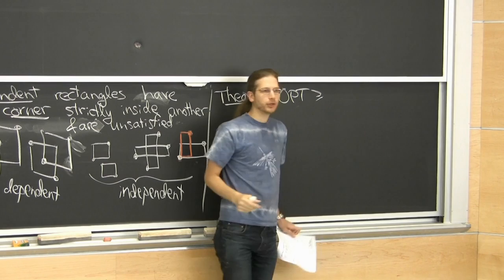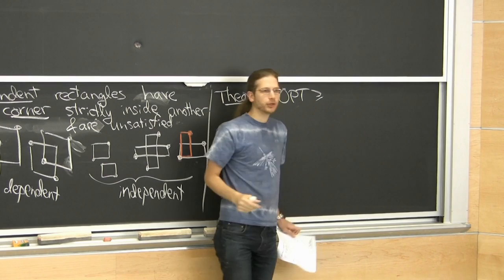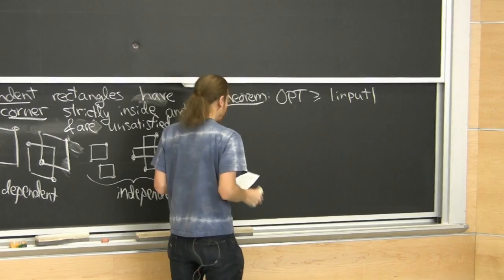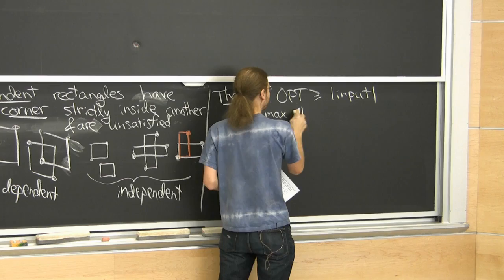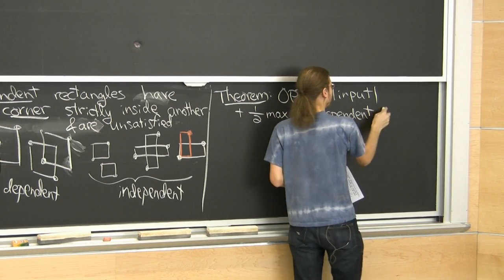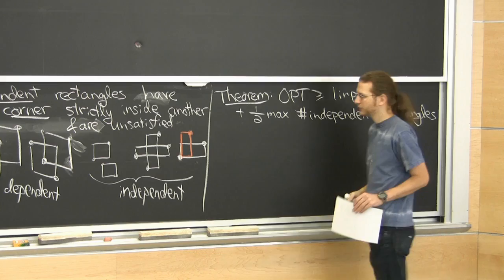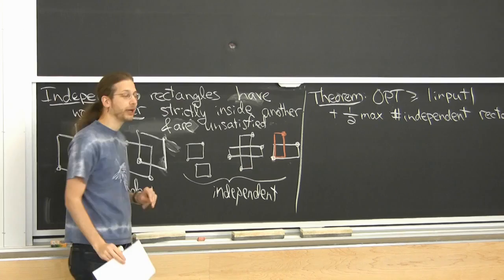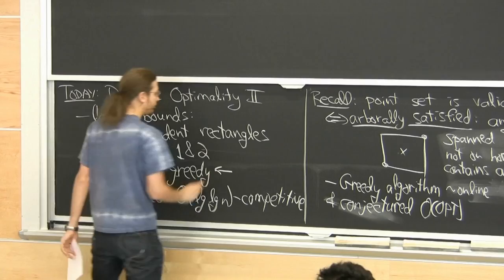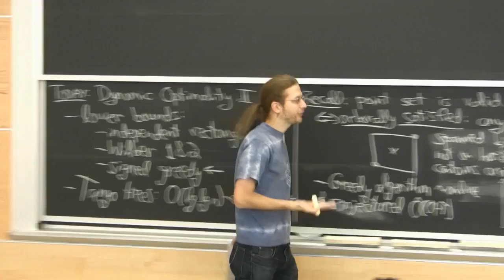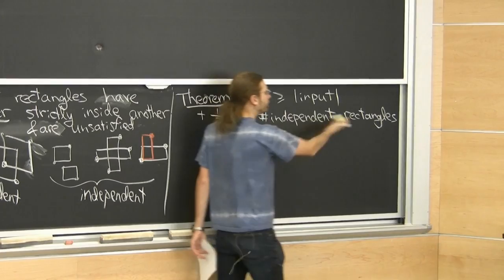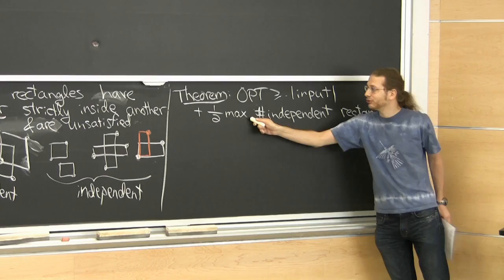The lower bound theorem says the optimal offline BST cost is at least the size of the input plus half the maximum number of independent rectangles. This is a max independent set problem — in general NP-complete. Signed greedy will be able to approximate the number of independent rectangles within a constant factor. Any choice of independent rectangles gives a lower bound, but you get the best lower bound by choosing the max.